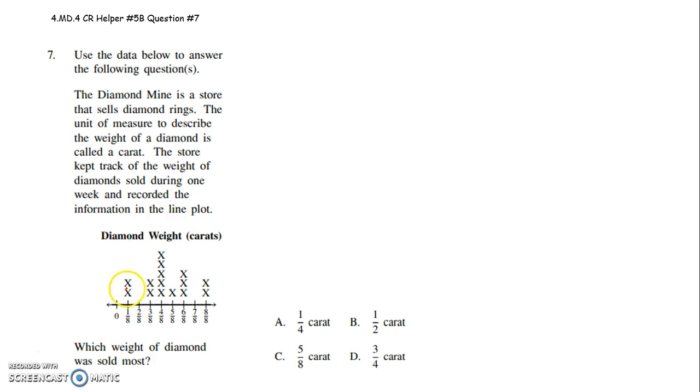So during that week they sold 2 one-eighth carat diamonds, 2 three-eighths of a carat diamonds, 1, 2, 3, 4, 5 four-eighths carat diamonds, 1, 2, 3 five-eighths, 1, 2, 3 six-eighths, and 2 that were eight-eighths or 1 full carat of a diamond.